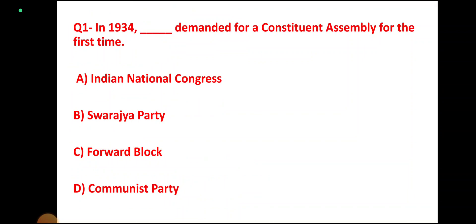Question number 1. In 1934, who demanded a Constituent Assembly for the first time? Options: Indian National Congress, Swaraj Party, Forward Bloc, Communist Party. Correct answer: Indian National Congress.